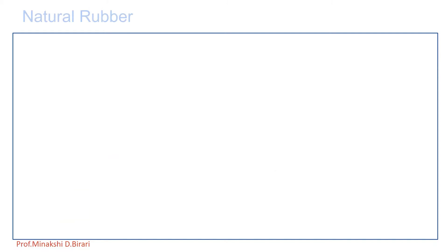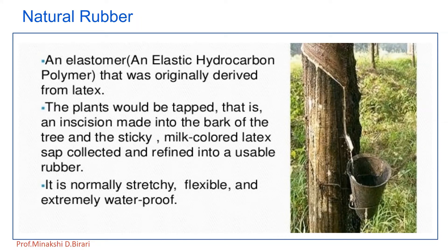Let us see the properties of natural rubber in detail. Natural rubber is a high molecular weight linear hydrocarbon polymer which exhibits elasticity and other rubber-like properties. It is obtained from the latex — the white liquid present in rubber trees. The plants are tapped, meaning an incision is made into the bark of the tree, and the sticky milk-colored latex sap is collected and refined into usable rubber. It is normally stretchy, flexible, and extremely waterproof.